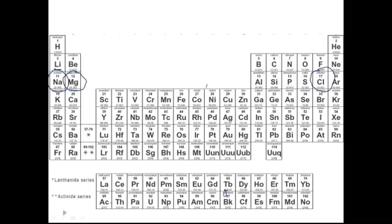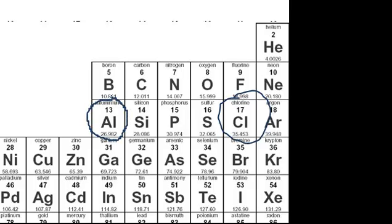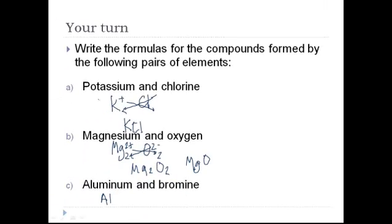Aluminum is a little tricky. It's in group 13. Even though it's on the right hand side, it's still a metal. And because it's in group 13, it has a charge of positive 3. Bromine, just like chlorine, is in group 17, so it gets a minus sign. We'll cross the charges. And we end up with AlBr3.